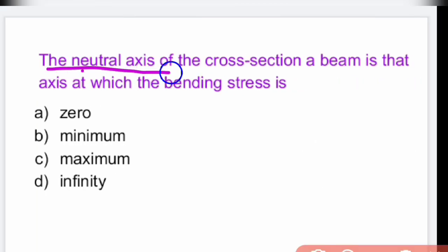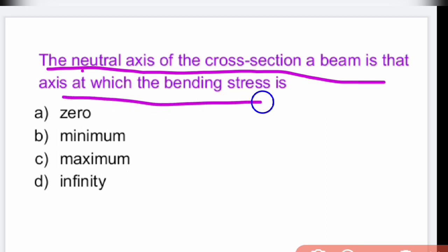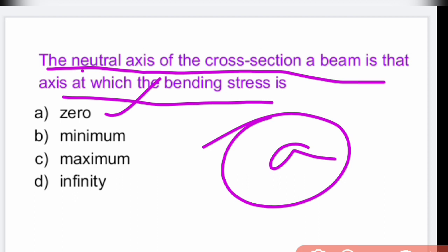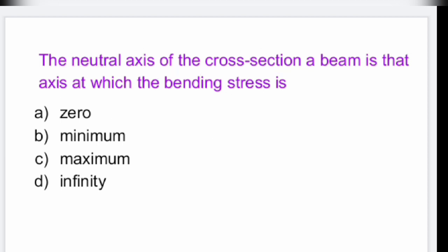The neutral axis of the cross section of a beam is that axis at which the bending stress is zero. That is option A.